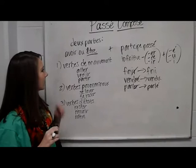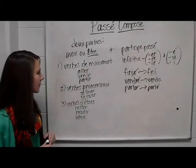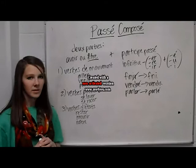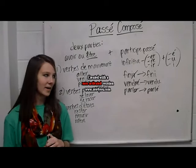It's important to remember that when using être for the verb, the past participle has to agree in gender and in number. For example, if the subject is feminine, then you would add an e to the past participle. If the subject is plural, such as nous, you would add an s to the past participle. And if the subject is feminine and plural, you would add an es to the past participle.